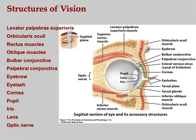The levator palpebrae superioris is the muscle that lifts your upper eyelid — 'levator' means elevator, 'palpebrae' means eyelid, 'superioris' means upper. The orbicularis oculi is the muscle that makes you wink. The rectus and oblique muscles move the eyeball. The bulbar conjunctiva is on the eyeball itself; the palpebral conjunctiva is the same membrane as it wraps around and coats the eyelid.